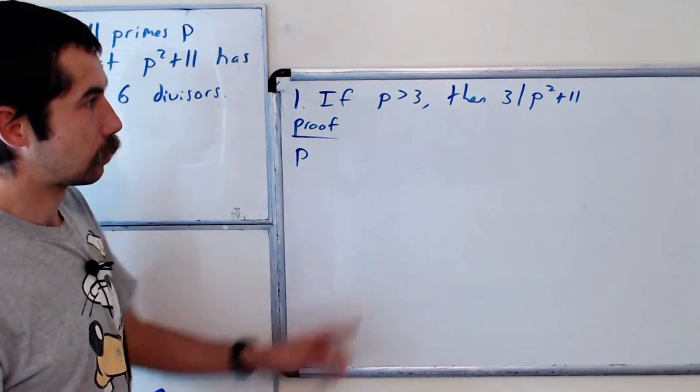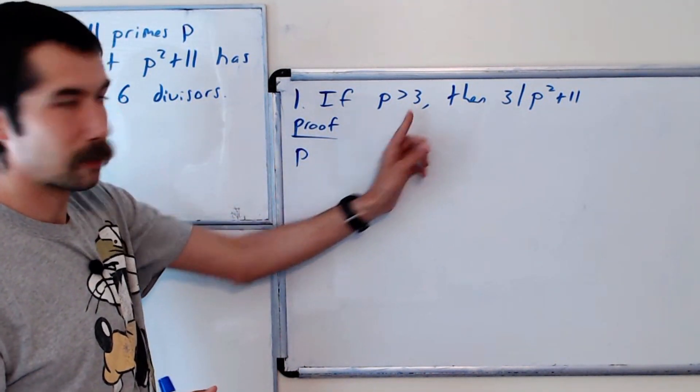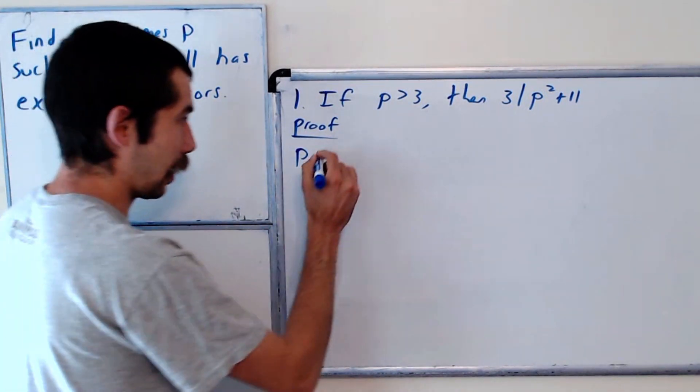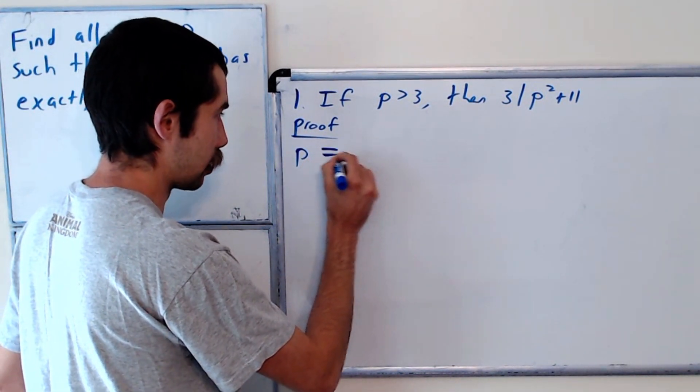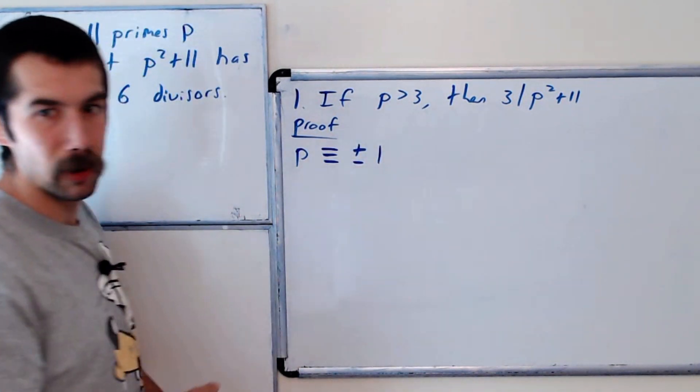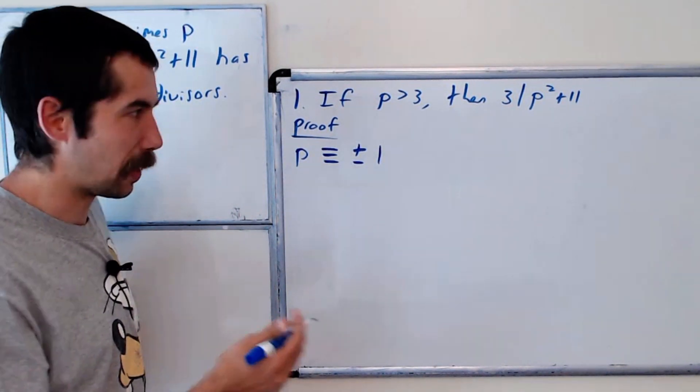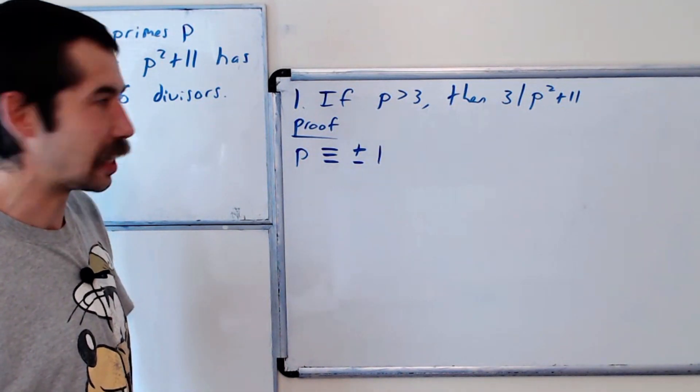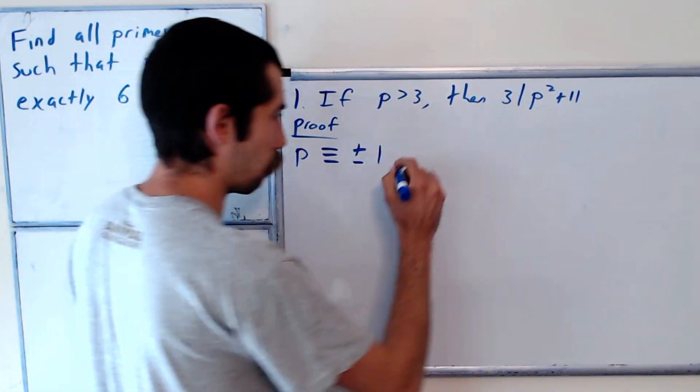So p, if it's greater than 3 and it's prime, it's not divisible by 3. So it's going to either equal positive or negative 1 mod 3. Meaning if you divide by 3, the remainder is either going to be 1 or negative 1.